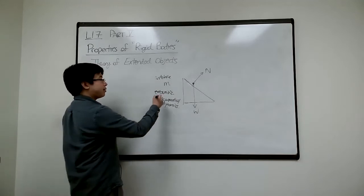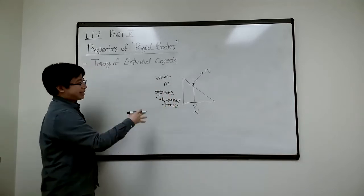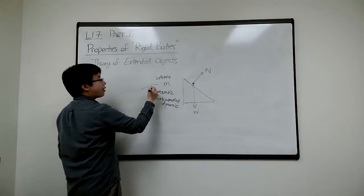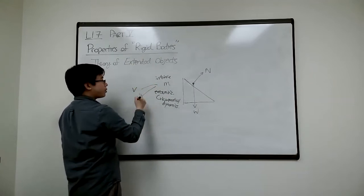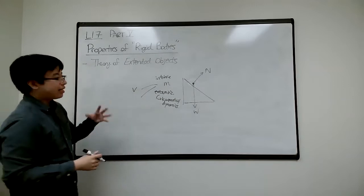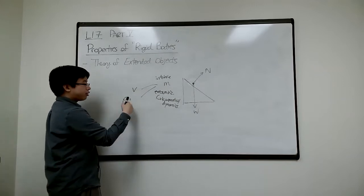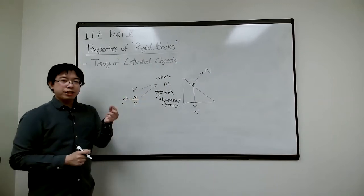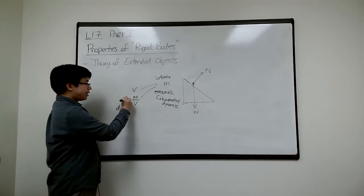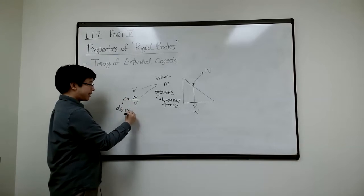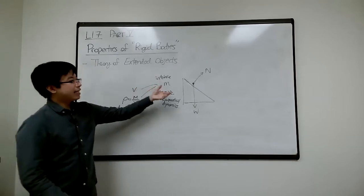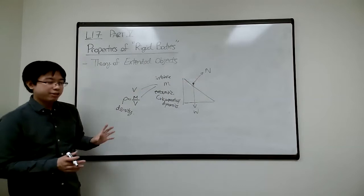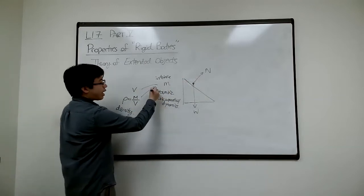And in 3B, you will learn that once we have extended object, technically we could talk about it here now, but you'll learn it more in detail later on. It will now, if things are extended, it will have a volume. And now we can talk about how much mass there is per volume, and we call it density and use the Greek symbol rho. The more mass per unit volume, the more dense it is. So it has other intrinsic properties.